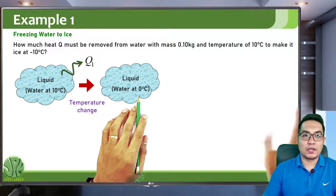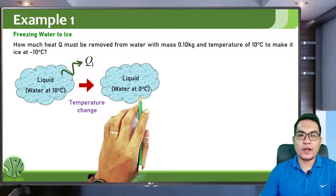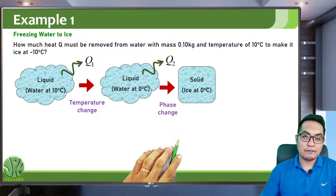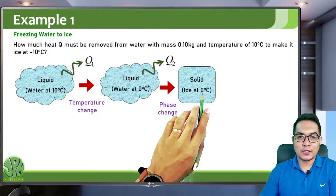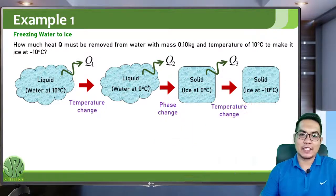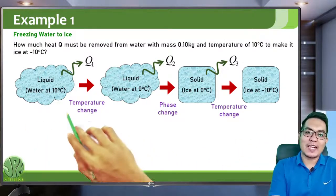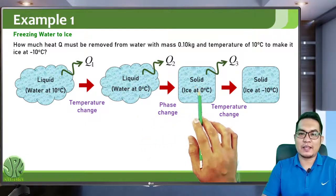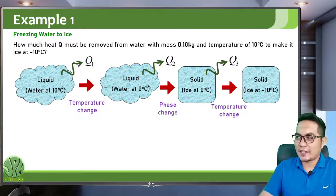You must not go directly to negative 10 degrees Celsius — you must pass through the freezing point. At zero degrees Celsius (the freezing point), the liquid water releases further heat to become ice at zero degrees Celsius — a phase change from liquid to solid. Then the ice at zero degrees Celsius releases further heat to become ice at negative 10 degrees Celsius. So the problem actually involves three changes: temperature change from 10 to 0, phase change from liquid to solid, and temperature change from 0 to negative 10 degrees Celsius. You have three heats Q1, Q2, and Q3, all expected to be negative.